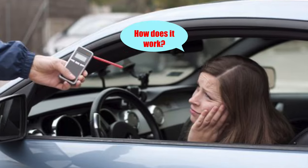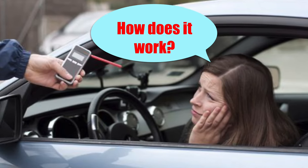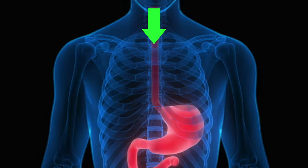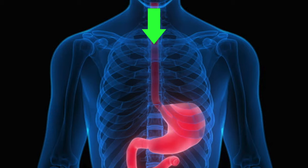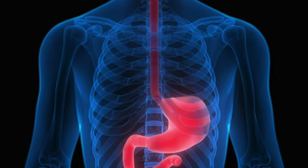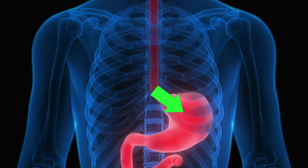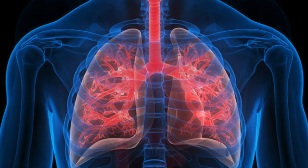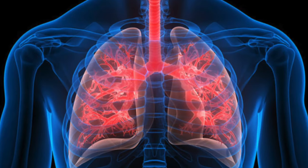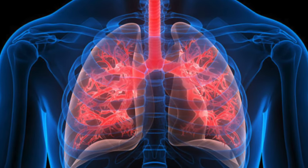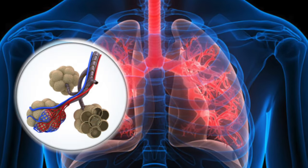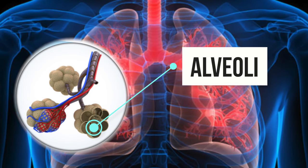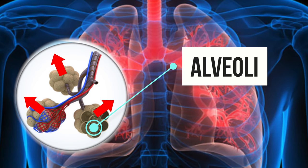So, how can a person's breath show how much that person drank? Well, alcohol that a person drinks gets absorbed from the mouth, throat, stomach, intestines, and into the bloodstream. As the blood goes through the lungs, some of the alcohol moves across the membrane of the lungs' air sacs, called alveoli, and into the air.